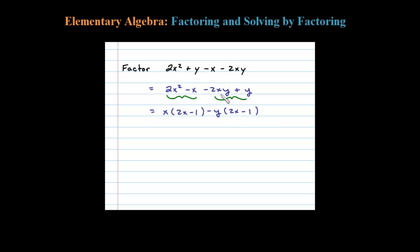Negative y times 2x is negative 2xy. Negative y times negative 1 is plus y. Okay, now we have what looks like a binomial here with a GCF of the quantity 2x minus 1.